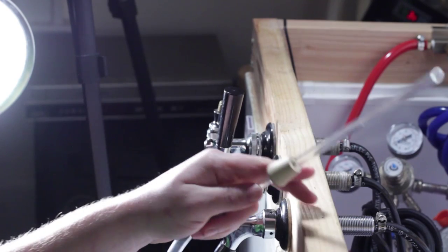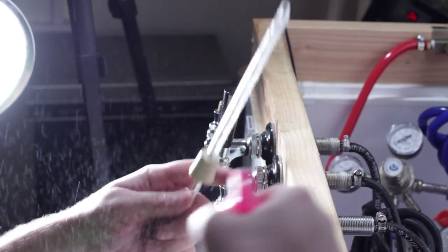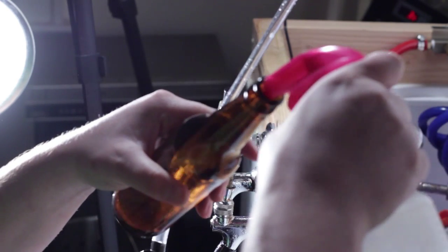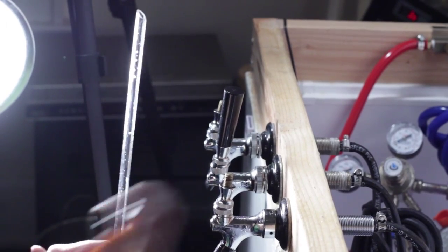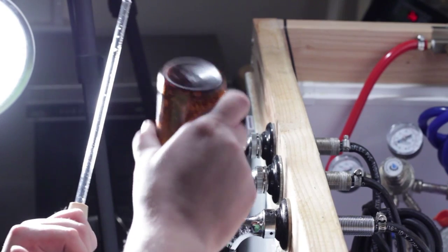Before your beer gun comes in contact with any beer or beer bottles, make sure to sanitize it first. I prefer star san, a no-rinse sanitizer. Normally I'd have a bunch of bottles already sanitized, but for this video I'm just going to give this one a quick squirt and dump out any excess.